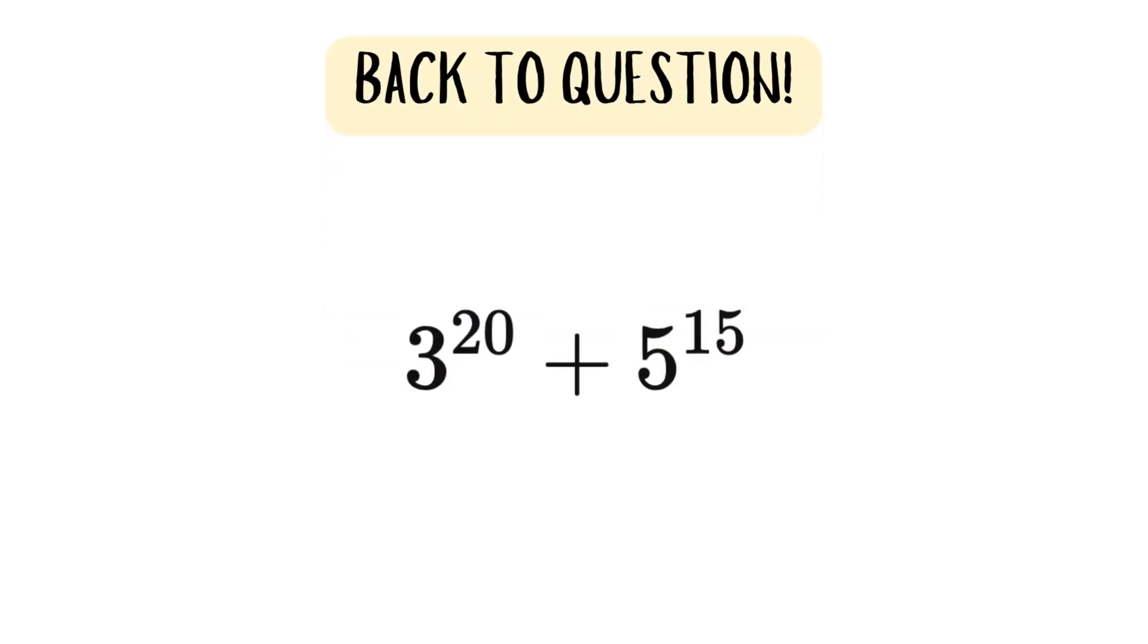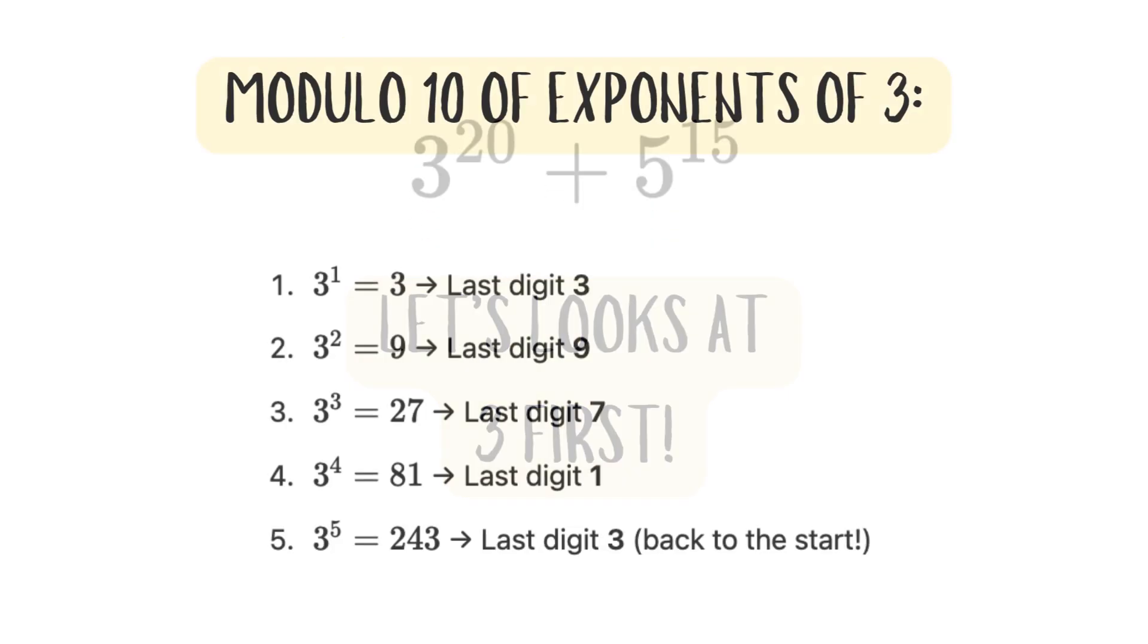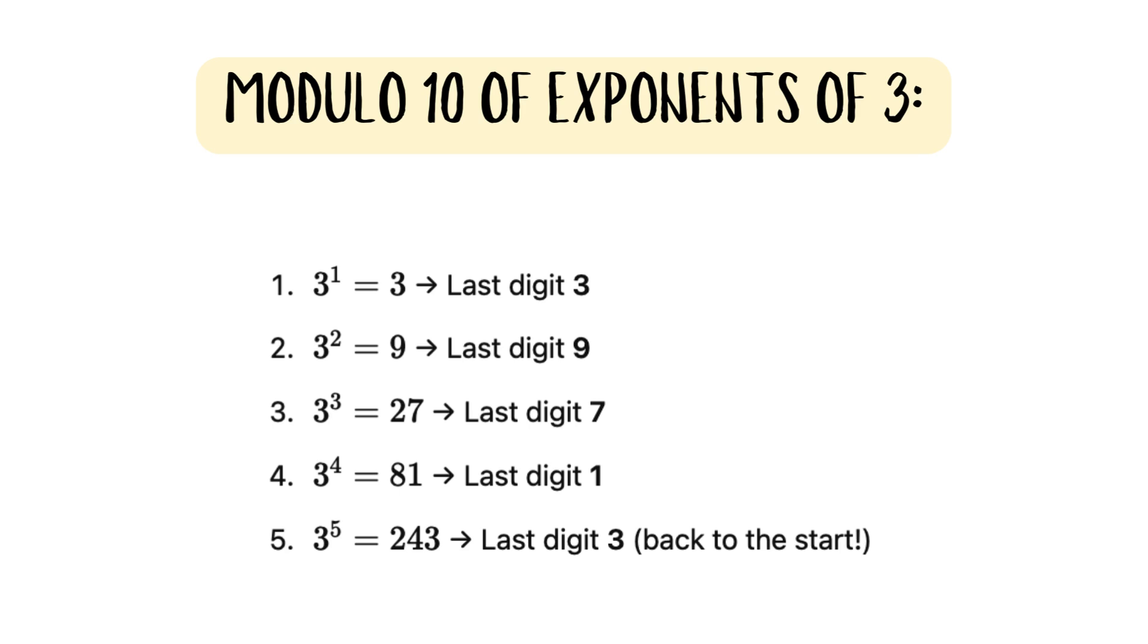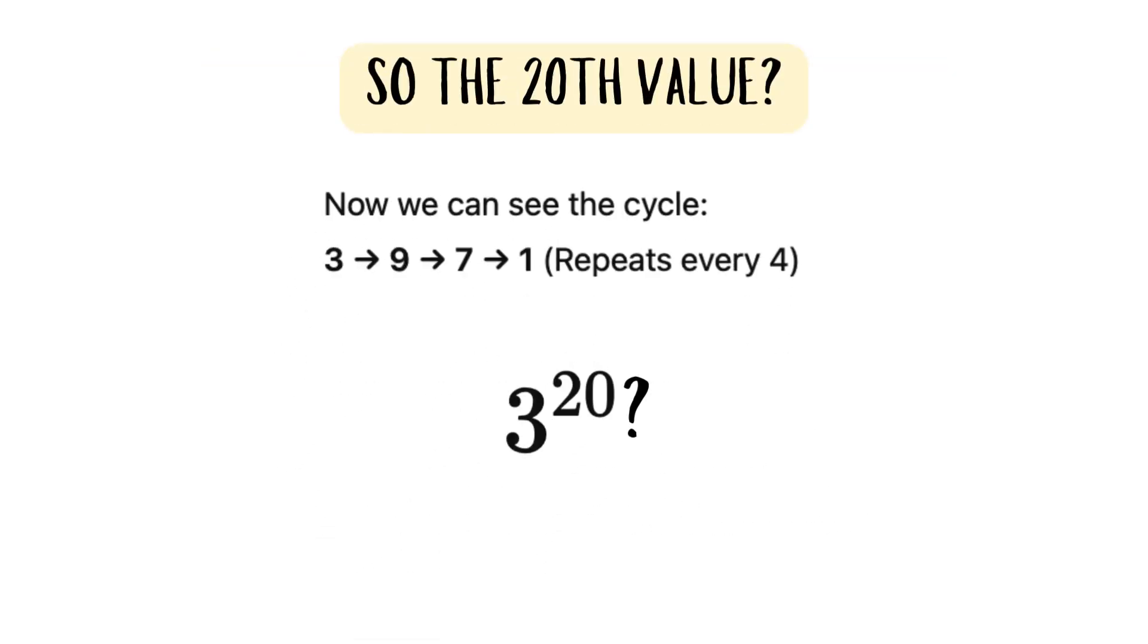So now let's head back to the question. First, let's look at the last digit of 3 raised to the power of 20. Modulo 10 of exponents of 3 goes in a pattern like 3, 9, 7, 1, and then at 3 to the power of 5, it goes back to 3. So what would be the 20th value?